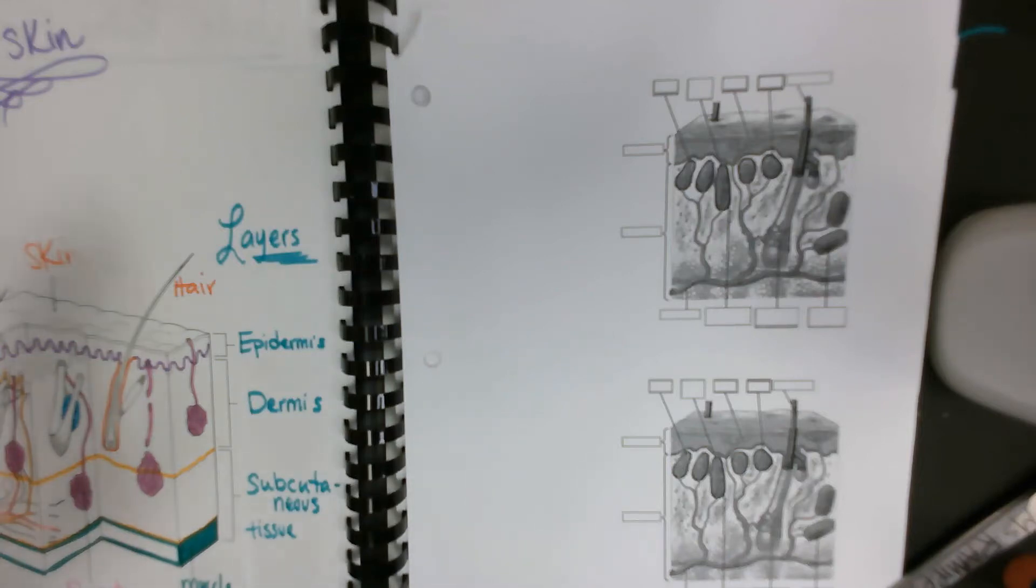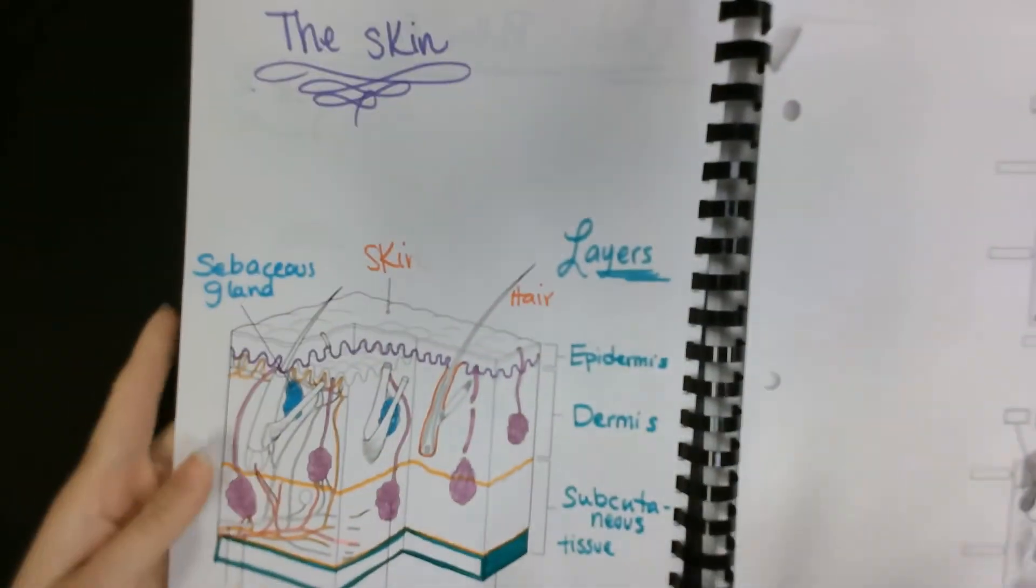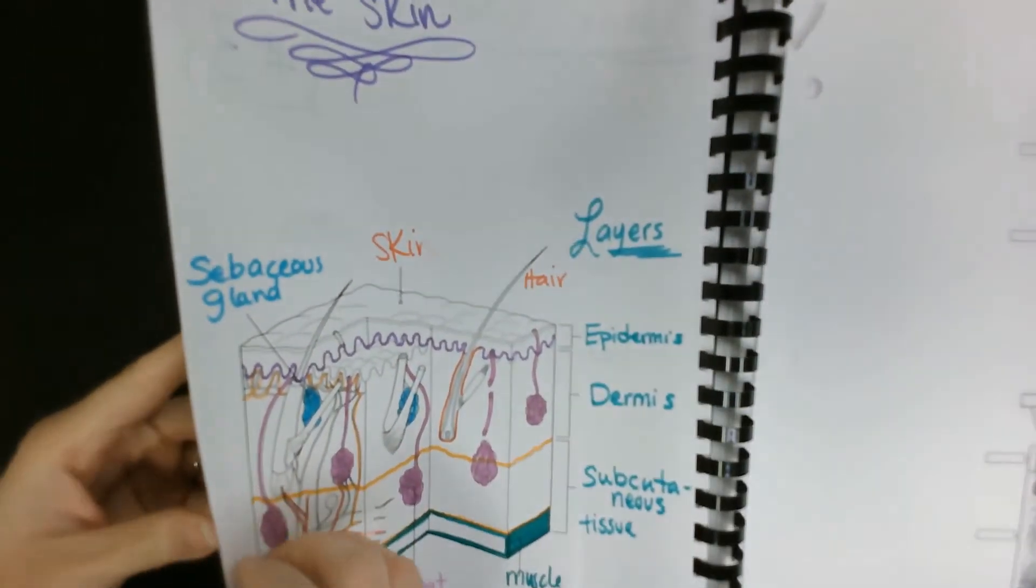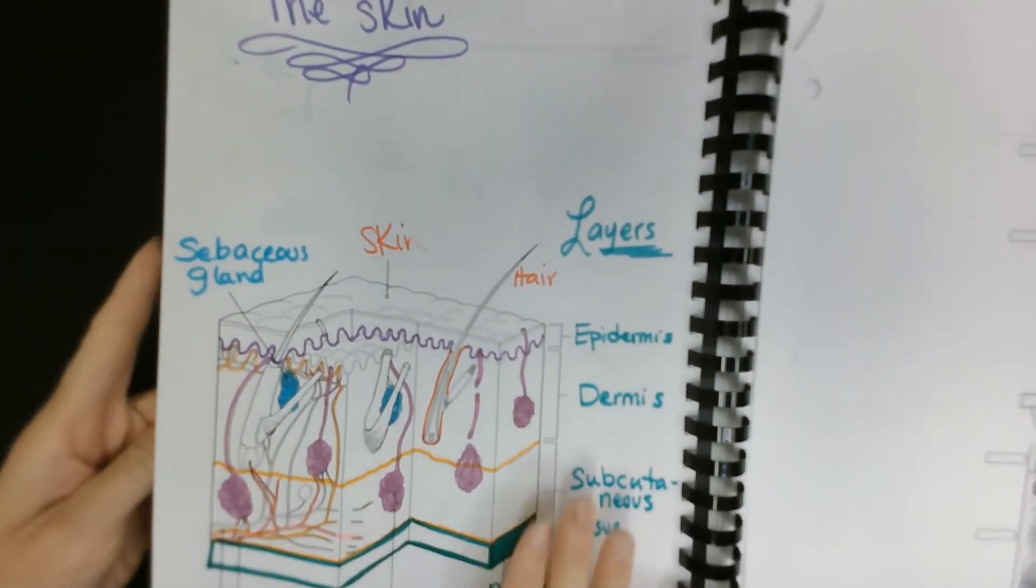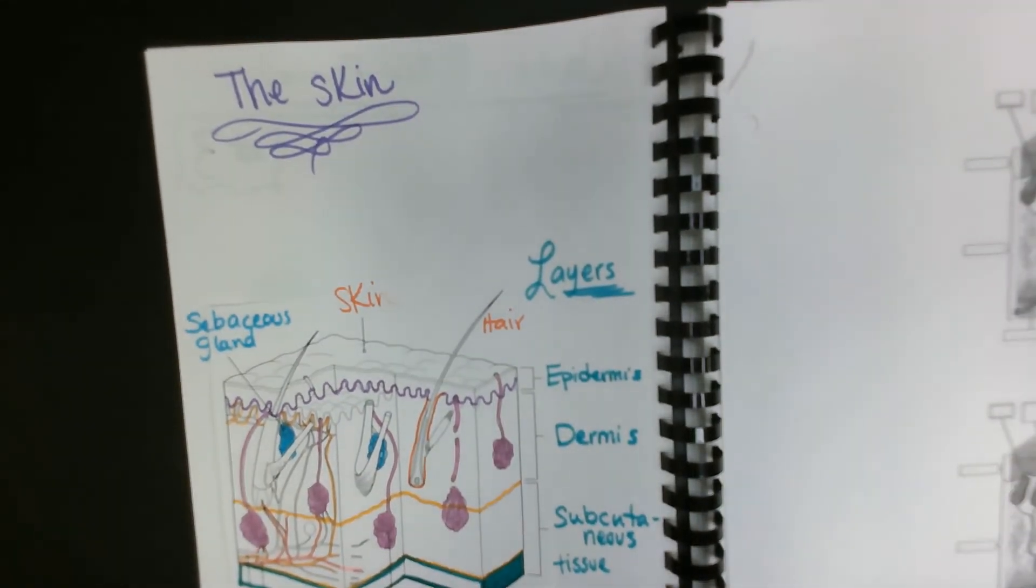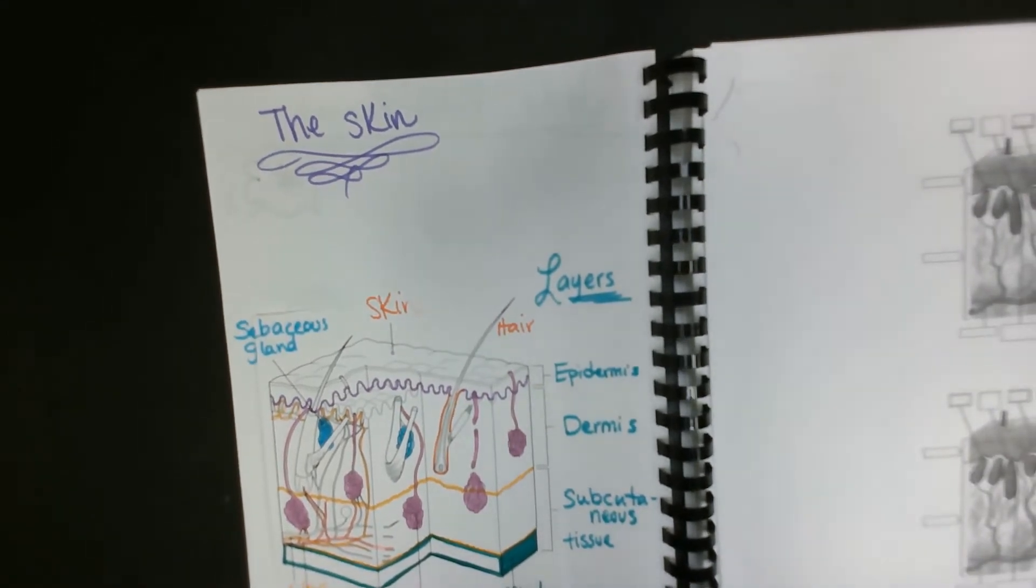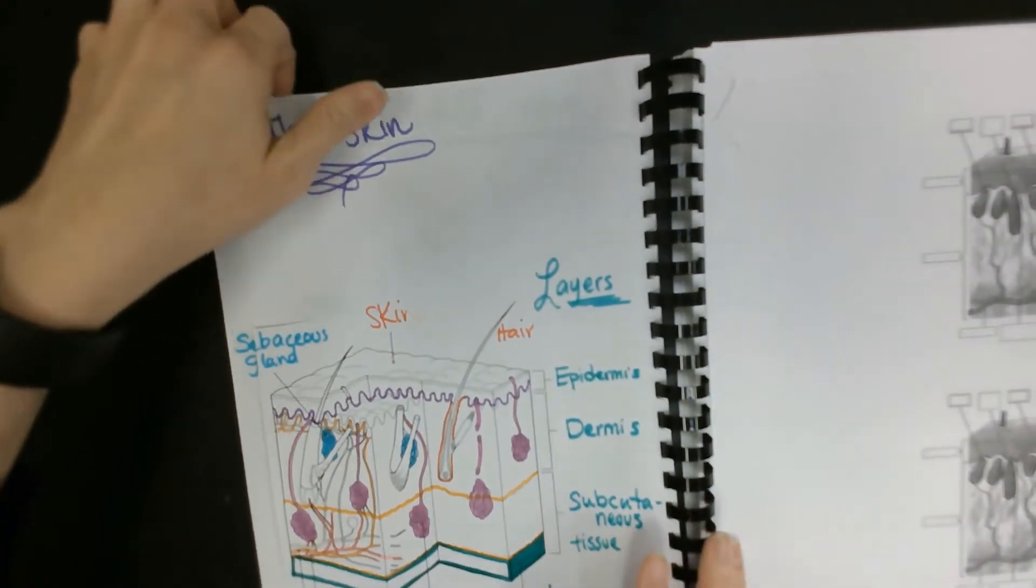All right guys, so today we're going to continue with our theory. We have our markers, scissors, and glue that we will be using. We are working on our journal. The last thing that we did in our journal was the skin, so let me pull this up a little bit for you so you can have a better view.